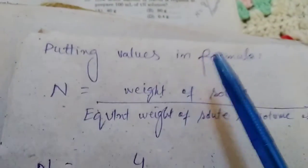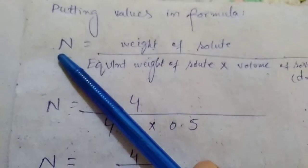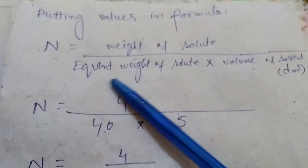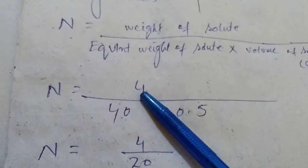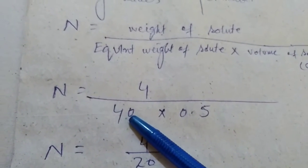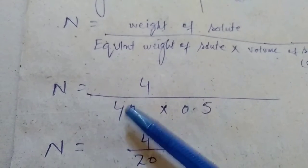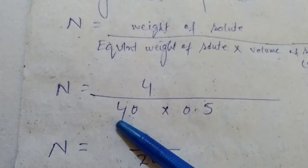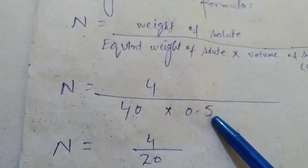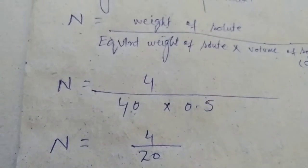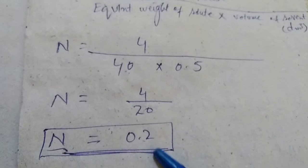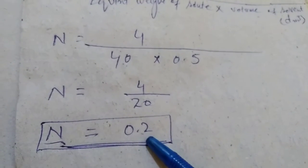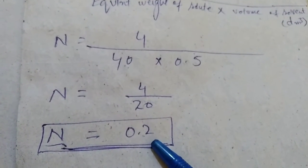Now putting these values into the normality formula: normality = weight of solute ÷ (equivalent weight of solute × volume of solution in dm³). Normality = 4 g ÷ (40 g × 0.5 dm³). Dividing and multiplying, the answer becomes 0.2 normality. This is all about normality. Thanks.